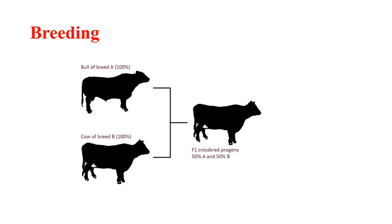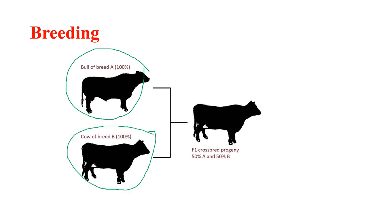Coming to breeding, breeding involves mating parents of different varieties, each having some desired traits, which are then passed on to the offspring. As shown in this picture, a bull of breed A and a cow of breed B are crossed. The resulting F1 progeny contains 50% characteristics of breed A and 50% characteristics of breed B.